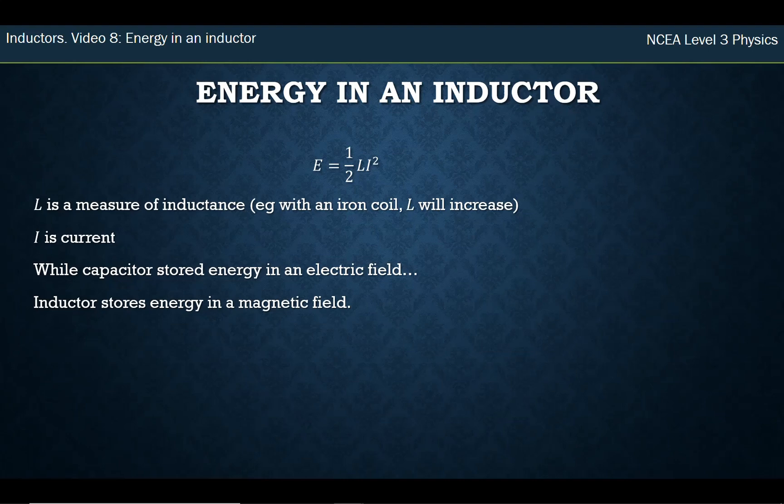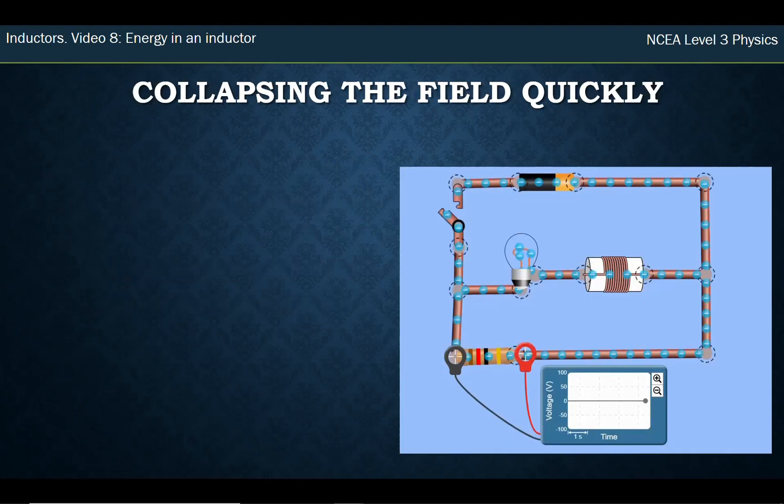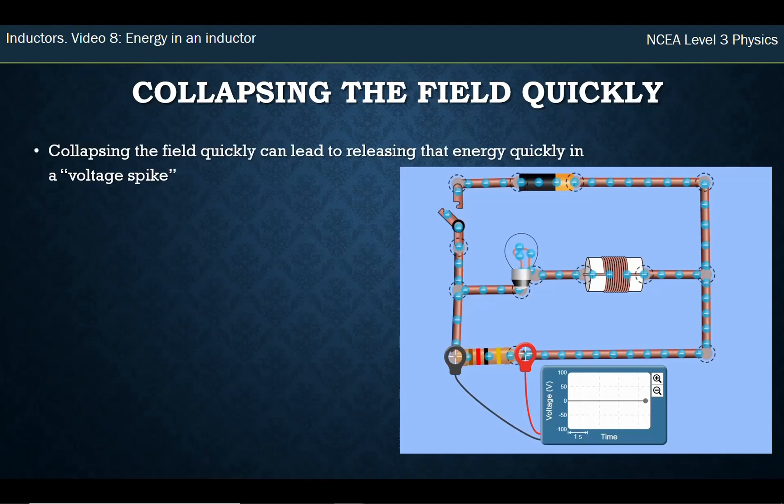That's a pretty basic formula to use, no troubles there. An interesting thing happens if you set up a certain circuit like the one we've got here. What I'm going to do is collapse the magnetic field in the inductor quickly and we can get a voltage spike.